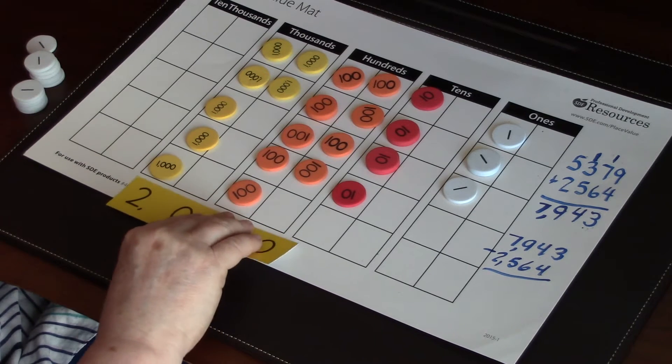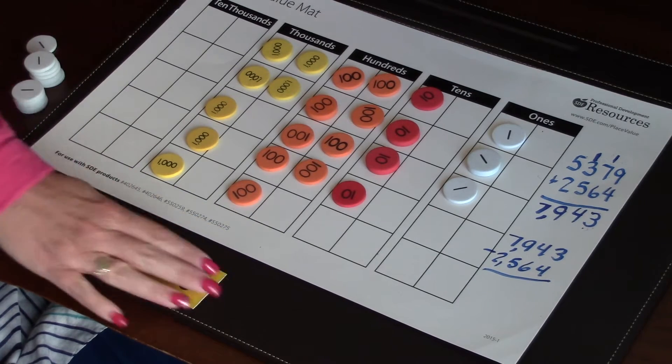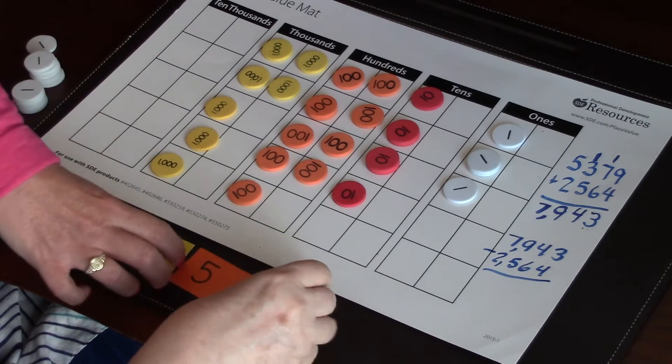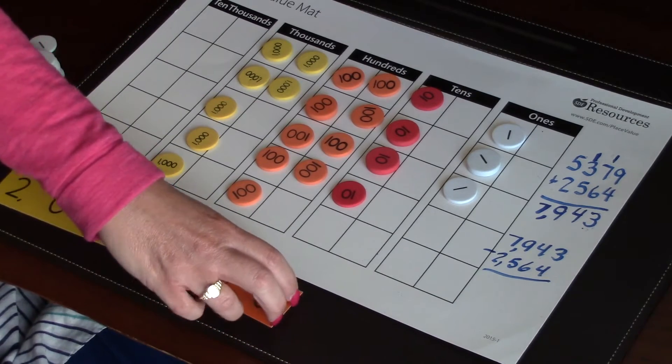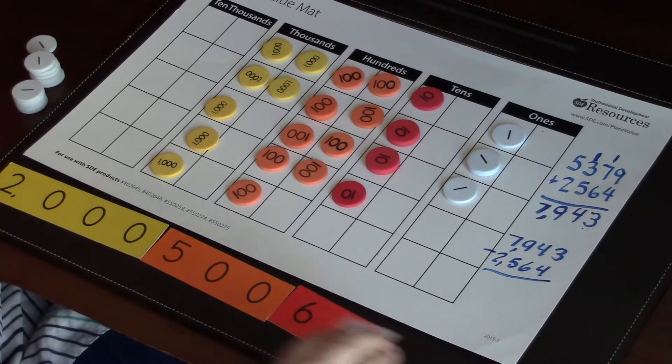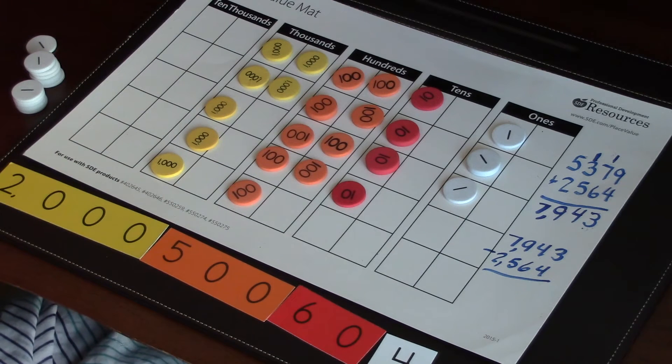So I need to build 2,000. I'm going to slide these over just a little bit because I want them to see it in expanded form. Put that one in there. 500. And some of them will overlap and that's okay. 64. So they're showing this part in expanded form using their place value strips.